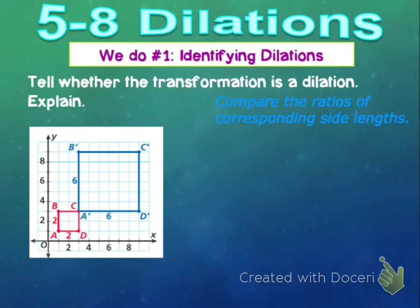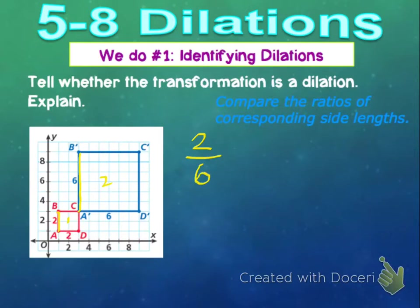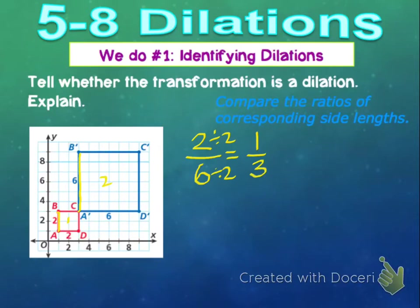Starting with the side of our square — square one has a side length of two, and square two has a side length of six. We want to simplify that and see if each side has the same ratio. Two and six are both divisible by two, so we simplify this down to one-third. The first ratio is one-third. Next, on the bottom we've got two over six — again, two for the small and six for the big — which also simplifies to one-third.